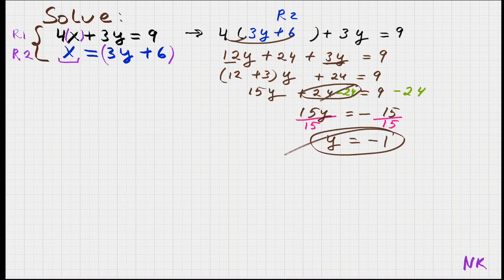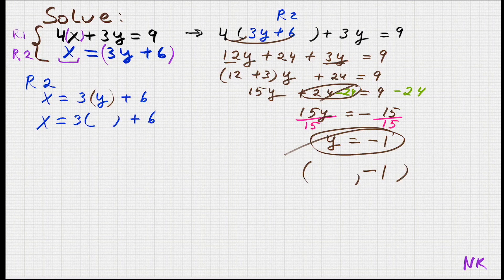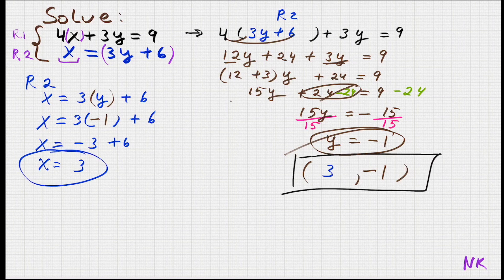So this is part of our solution. A solution to a system of equations must be a point — we need both x and y values. We know y equals negative 1. Now I'll use row 2, which has x equals 3y plus 6. Substituting y equals negative 1: x equals 3 times negative 1 plus 6, which is negative 3 plus 6. The difference between 3 and 6 is 3, so x equals 3. Our solution is (3, -1).